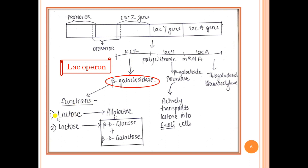Beta-galactosidase has the following functions: it brings about the conversion of lactose into an isomer of lactose called allolactose. When lactose enters the cell, it gets converted into allolactose using beta-galactosidase. Beta-galactosidase also brings about the hydrolysis of lactose and allolactose into the constituent monosaccharides beta-D glucose and beta-D galactose.